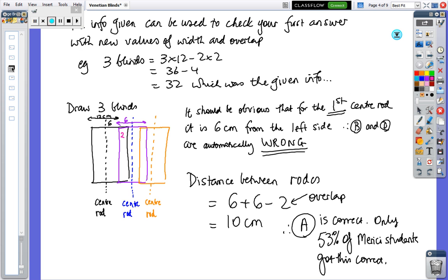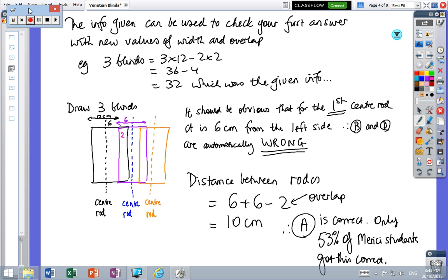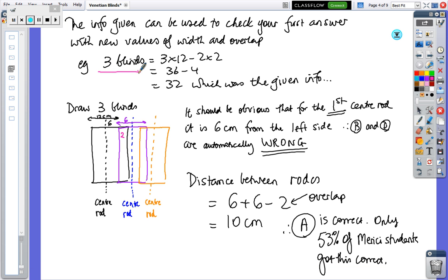Okay, so I've skipped too far again. So from the information, the information given can be used to check your answer. So for instance, in the question it said there were three blinds and using the formula that we worked out with 12 and 2 as the answers, 32 centimeters covers the information which backs up our first answer. But looking at the question, down here, I've drawn three blinds. I've got a black blind, a purple blind and a brown, it doesn't really matter.